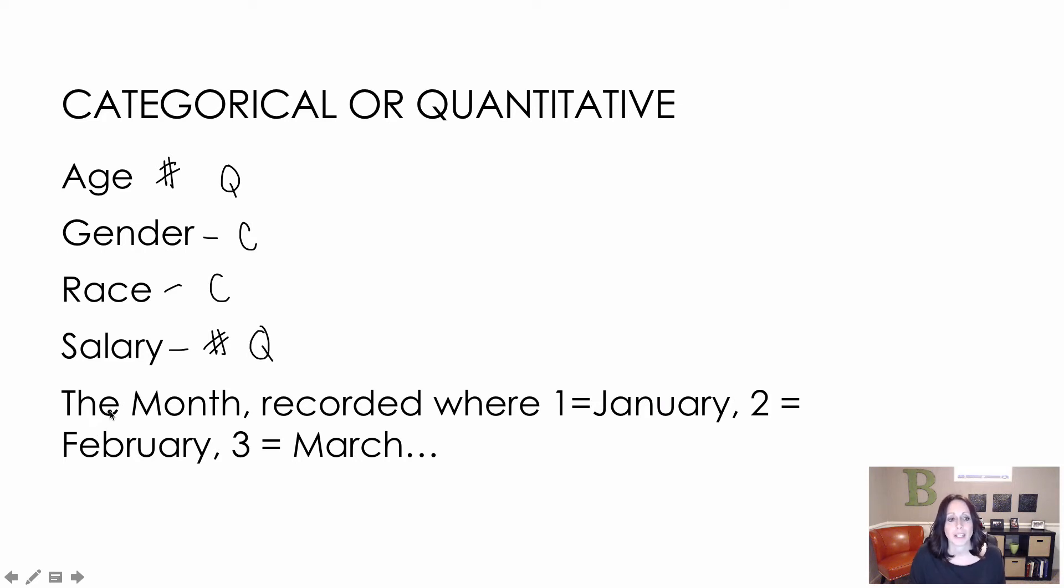Now I threw this last one in because it's important to understand that just because it's a number doesn't mean that it's quantitative. In this example, we have the month that's recorded where one is January, two is February, etc. Now I wouldn't consider these quantitative because I'm not going to find the average number of month. So it's not a number that's being recorded as a numerical value. It's just a number that's being used to express a category. So this is actually categorical.